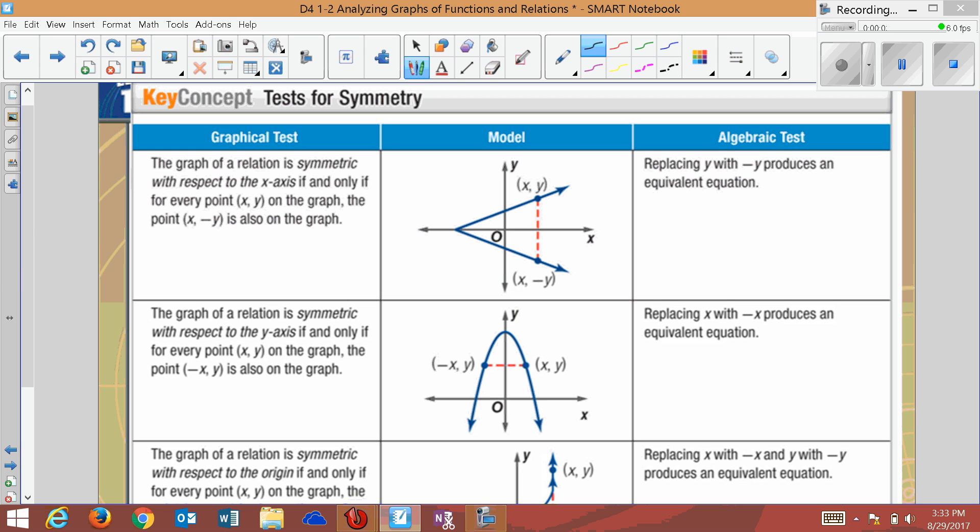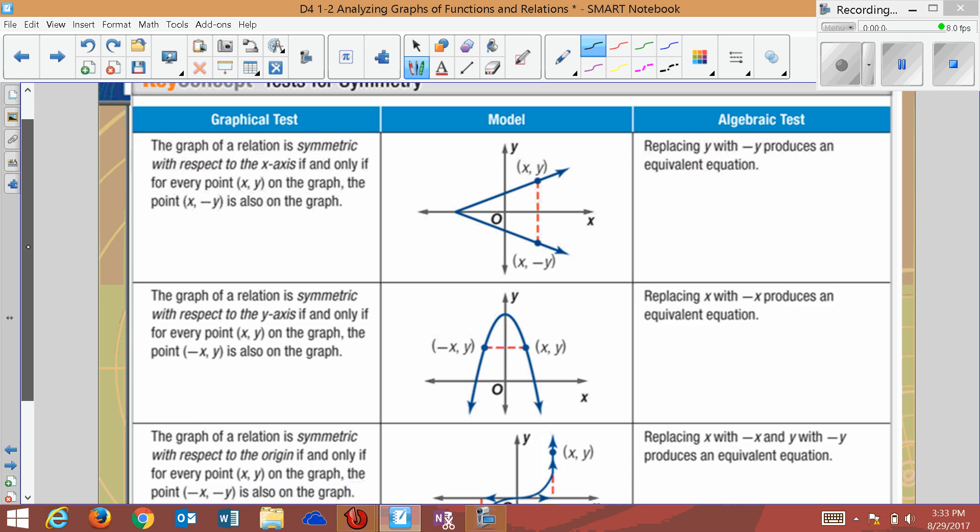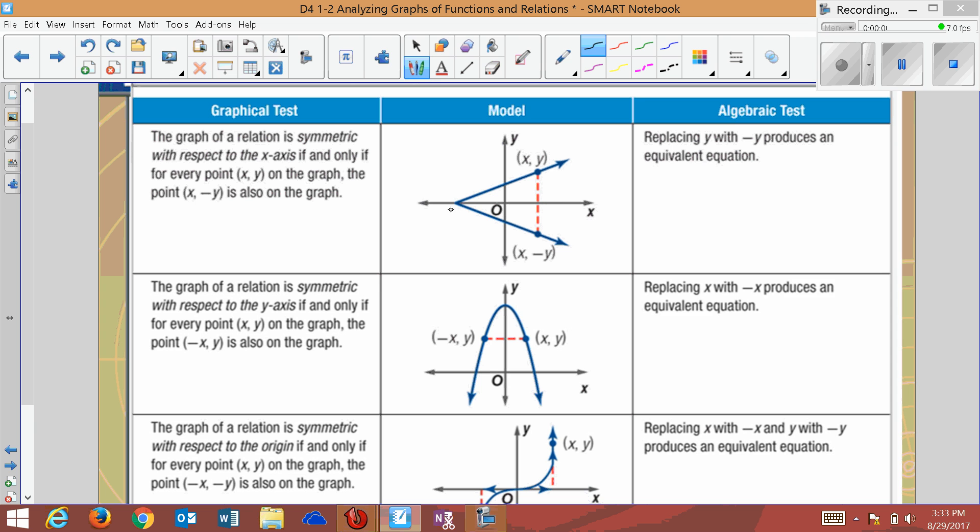When you test for symmetry, something can be symmetrical across the x-axis here, but when you change a point, only the y changes.